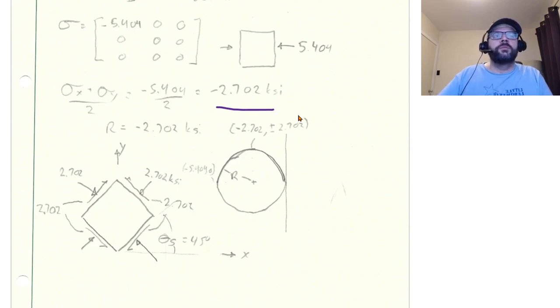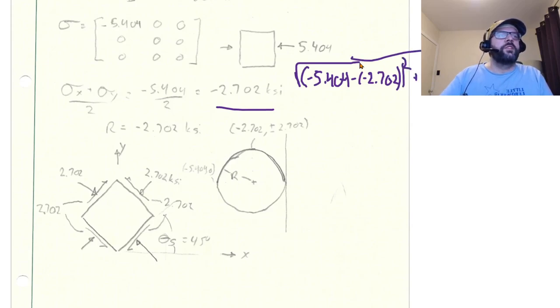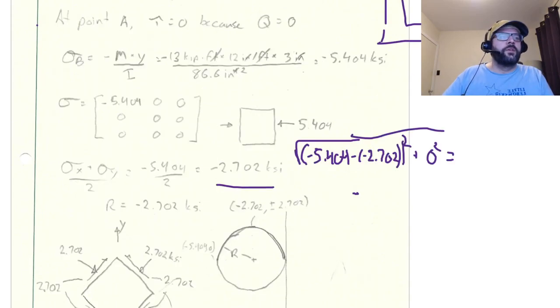So, negative 5.404 plus 0 divided by 2 gives us a negative 2.702 ksi which means that our radius, well, that's also, if we plug it into the actual calculation that just gives us negative 5.404 minus negative 2.702 squared plus 0 squared, which is equal to 2.702 ksi.